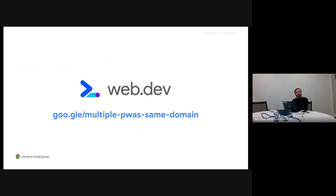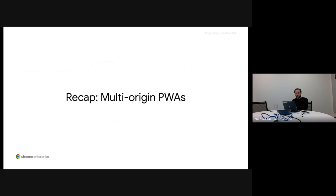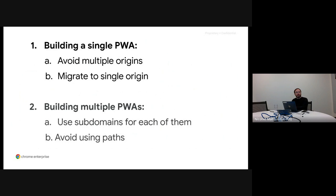Let's recap the two different scenarios we explored today about multi-origin PWAs. In the first case, you want to build a single PWA: our recommendation is to avoid using multiple origins like subdomains. If your site is built that way, migrating to a single origin is the best option. In the opposite case, where you want to build multiple PWAs taking advantage of the same domain name, using a different subdomain for each web application is actually recommended. And unlike the single PWA case, don't use sub-paths, as that will bring a lot of headaches and problems.